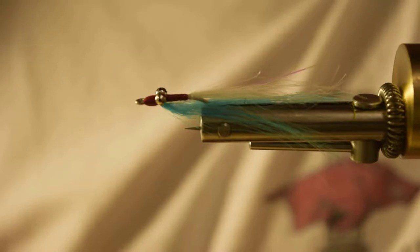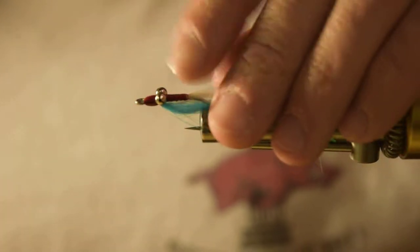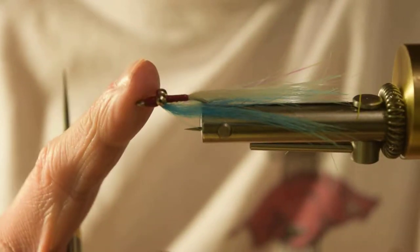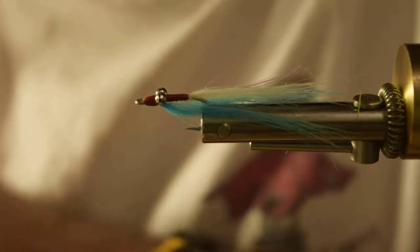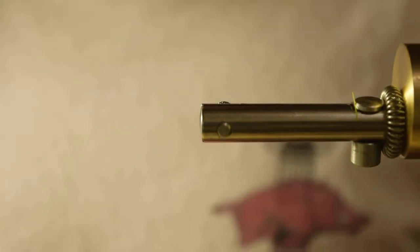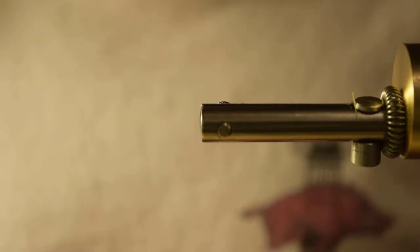Whenever it's these smaller guys, I really like using this craft fur. It's almost white bass season here in Arkansas and these are the fly I'll use on white bass. But they work good on largemouth bass, smallmouth bass, crappie, bluegill, whatever you want to throw them at really. You can catch on a Clouser or some variation of it.